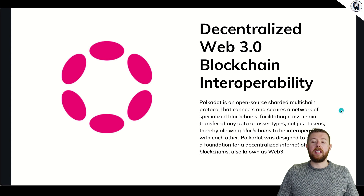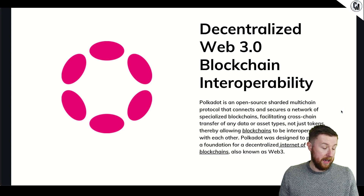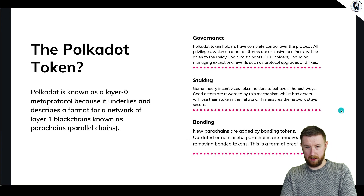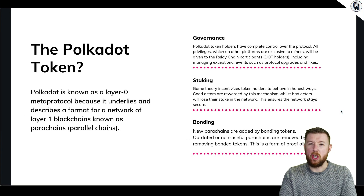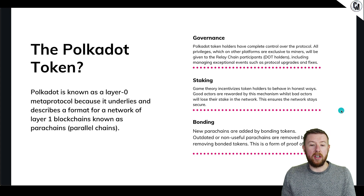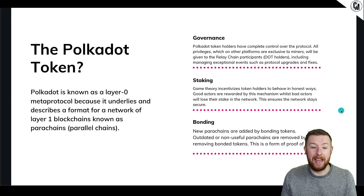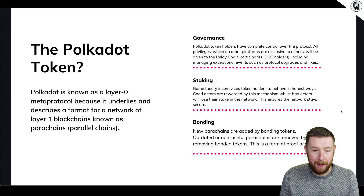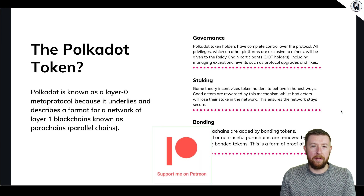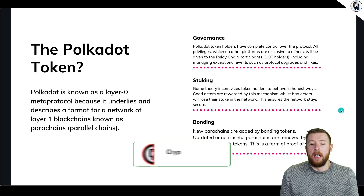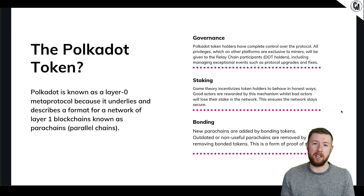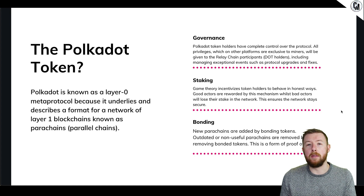Polkadot was designed to provide a foundation for the decentralized internet of blockchains known as web 3.0. Now let's talk about the token before we go anywhere else. The Polkadot token DOT is known as a layer zero meta protocol because it underlies and describes a format of a network of layer one blockchains known as parachains. In simple terms it is going to be a shared protocol to allow security, governance, and the utilization of that framework to enable multiple blockchains to be built on top of it.